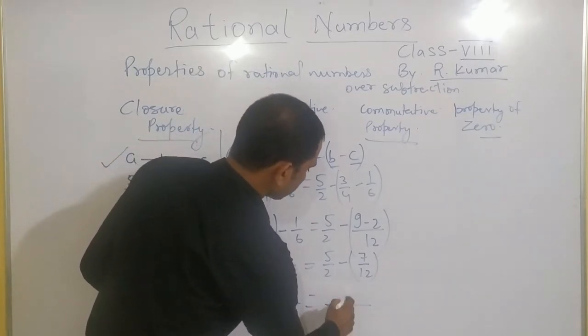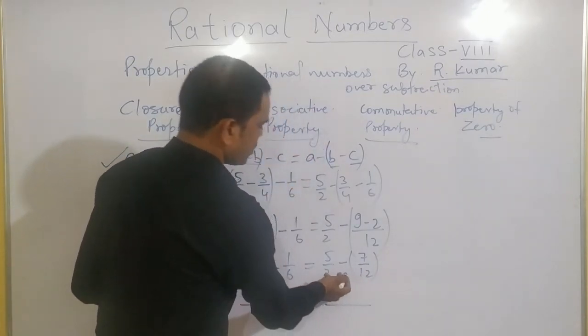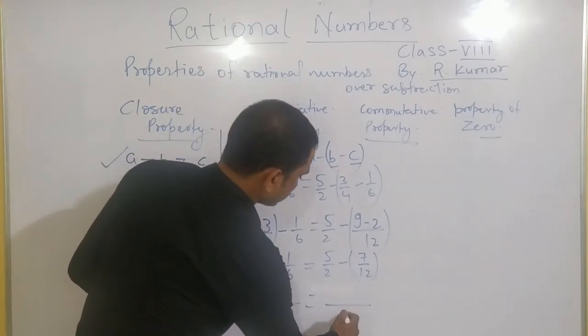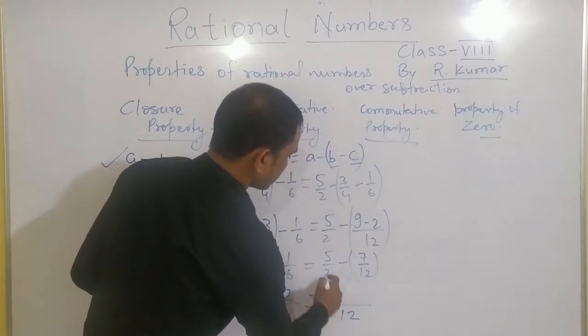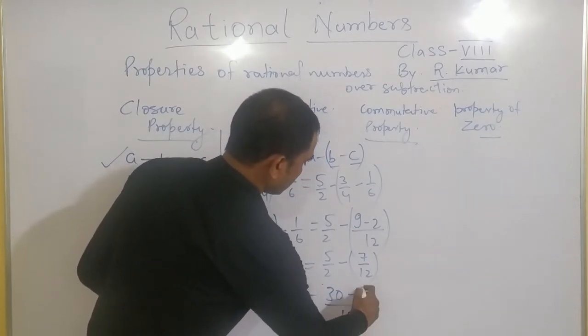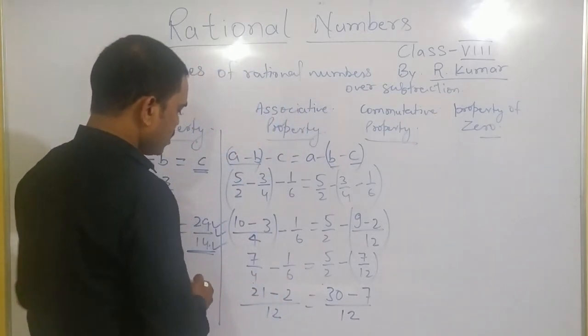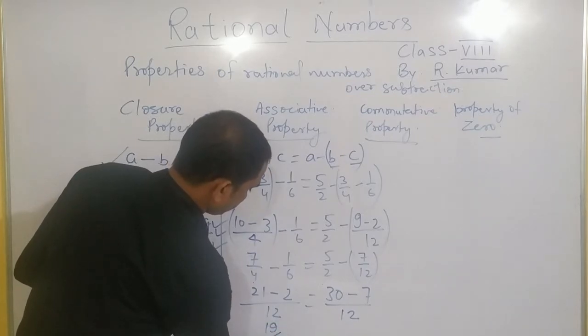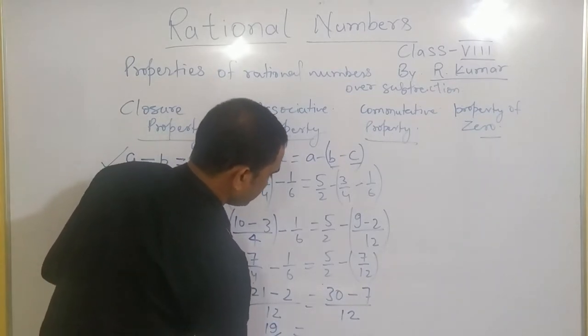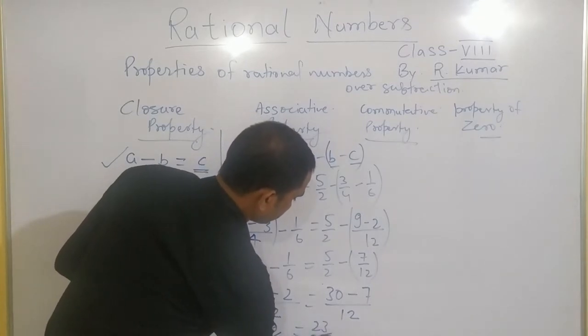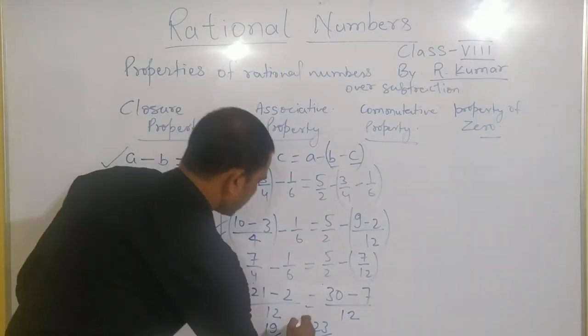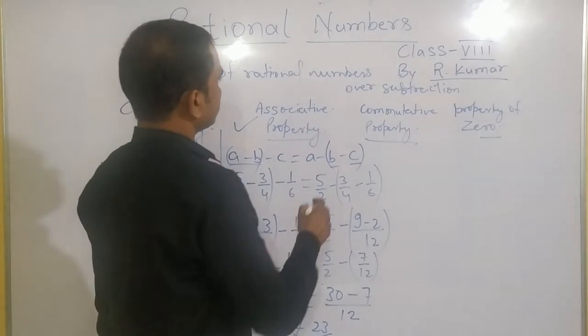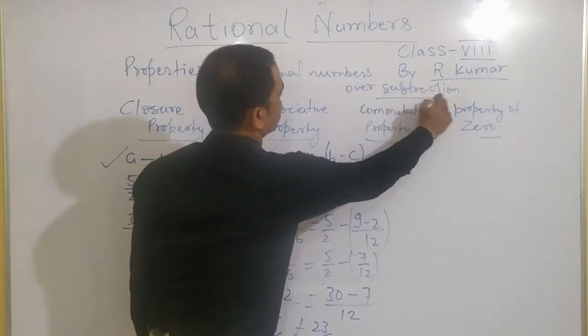This side, LCM will be, first when we take out this value from under the bracket, it will be the same only. LCM will be 12, 2 times 6 and 6 by 12 minus 12 and 7. When you subtract it, you will get 19 by 12 and when this side you subtract 23 by 12. You can see these two are not equal. Means, associative property will not satisfy for subtraction.